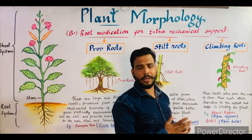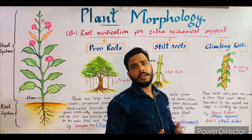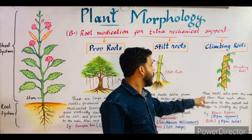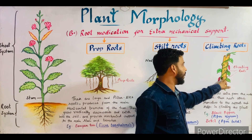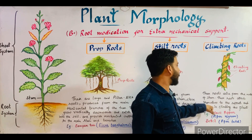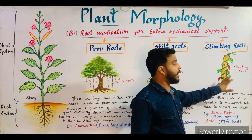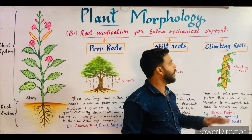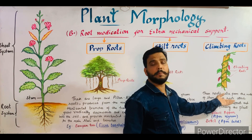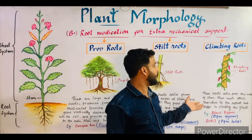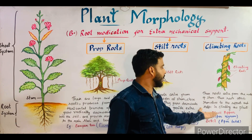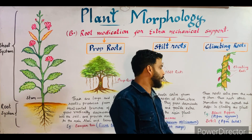These roots are known as climbing roots. They may be present in the money plant, black pepper (Piper nigrum), betel (Piper betle), etc. These roots arise from the nodes of the stem. As you can see in the diagram, the yellow colored roots are the climbing roots arising from the nodes of the stem. These roots attach themselves to any support — such as a stone or wooden piece — and help the plant in climbing. The example is black pepper, botanical name Piper nigrum, and betel, botanical name Piper betle.